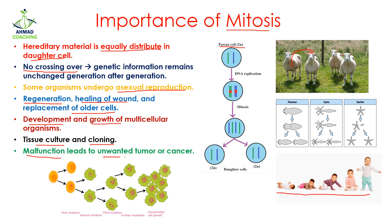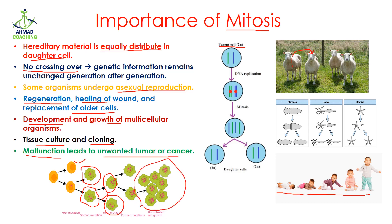For example, here we have a normal cell, and when it divides we get normal cells. But if the normal cell has some kind of mutation, the next generation cells are going to be tumor cells. If they keep on growing uncontrollably, they form a cluster of cells, which is known as cancer. These are the importances of mitosis.